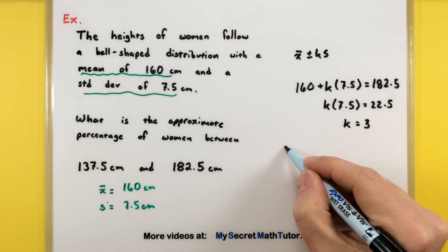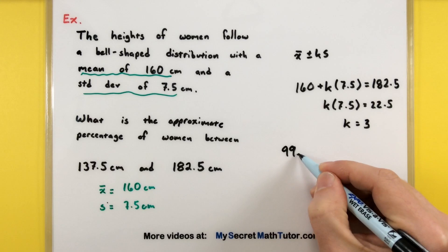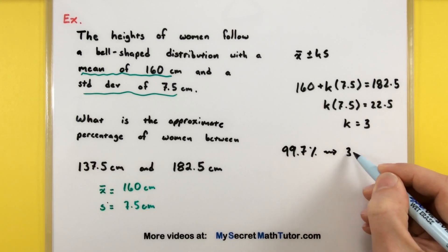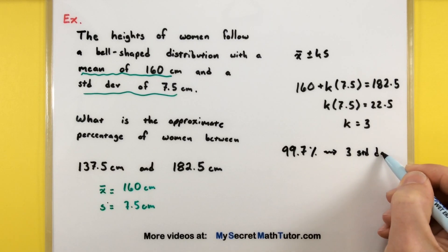Thinking back to the empirical rule, here's where we can use it. 99.7% corresponds to three standard deviations.